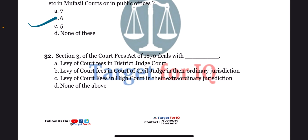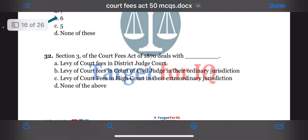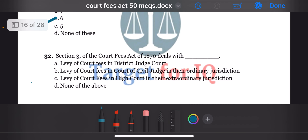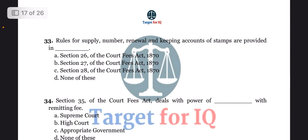Next question: section 3 of the act deals with dash. The options are A. Levy of court fee in District Judge Court, B. Levy of court fee in Court of Civil Judge in their Ordinary Jurisdiction, C. Levy of court fee in High Court in their Extraordinary Jurisdiction, or D. None of the above. The correct answer is option C. Levy of court fee in High Court in their Extraordinary Jurisdiction.